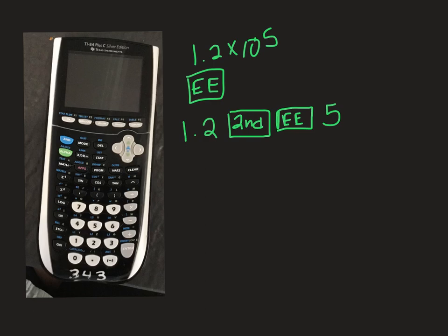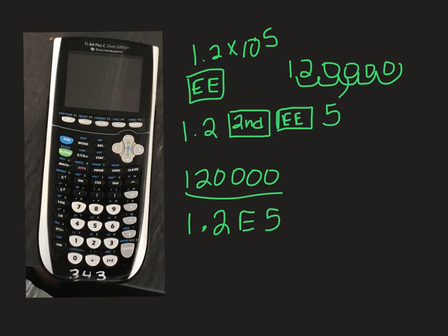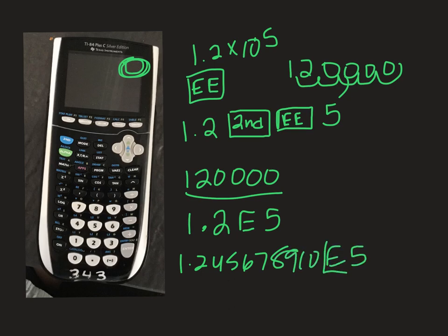Try that on your calculator right now. When you hit enter, you're going to get 120,000 — as we saw on the previous slide, which is 1.2 times 10 to the 5th, because we move our decimal point over 5 places: 1, 2, 3, 4, 5 — there's our 120,000. Your calculator is sometimes going to display this as 1.2 E 5, which means 1.2 times 10 to the 5th. You need to make sure you look at the end of the number for an E, because it could appear after a long number like 1.2456789, then E 5 at the very end.